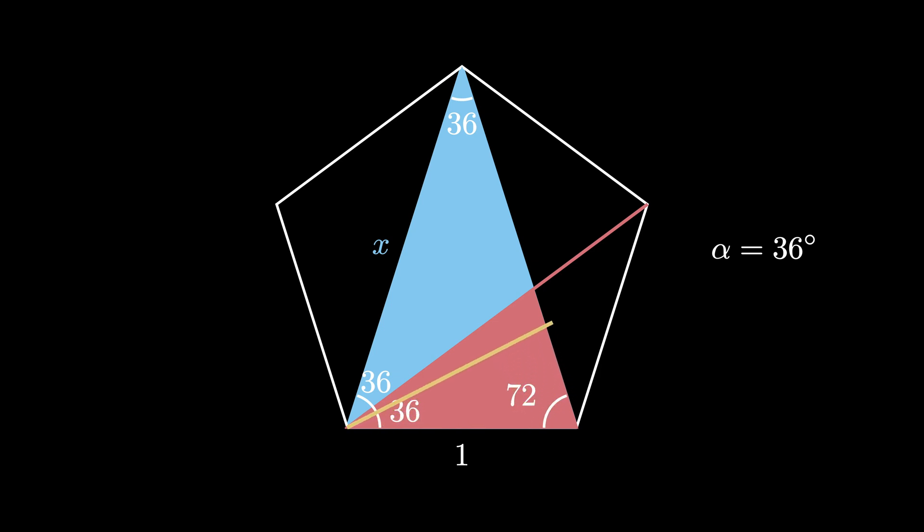Using the fact that these three triangles are isosceles, we can see that this side length here is 1, so that the short side length on the red triangle is x minus 1.